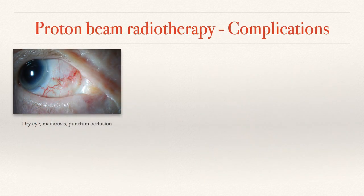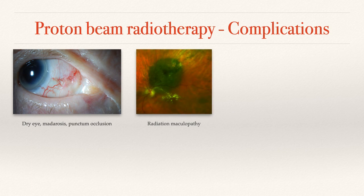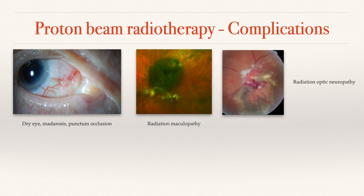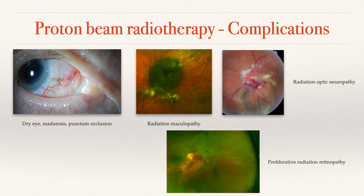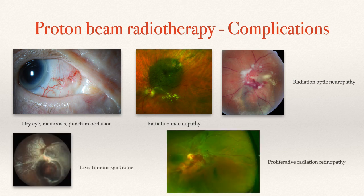There are, however, chances of complications. Because it's an external form of radiation, you can get some damage to the eyelids and to the drainage systems of the tears. There is a much higher rate of radiation-related maculopathy and optic nerve damage. You can also get breakdown of the tumour giving what's called toxic tumour syndrome, which often gives rise to the need for further enucleation if the tumour breaks down so quickly that toxins released damage the eye dramatically.